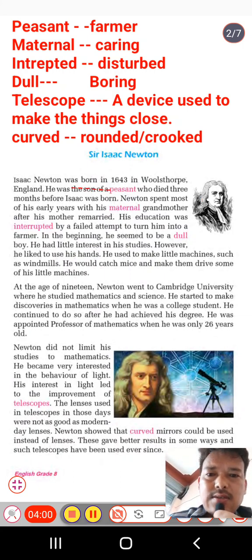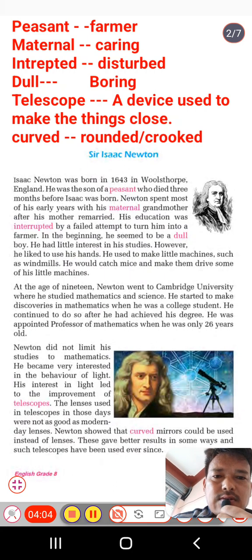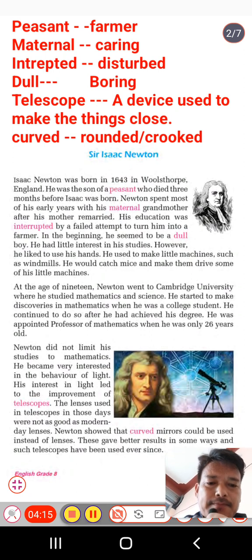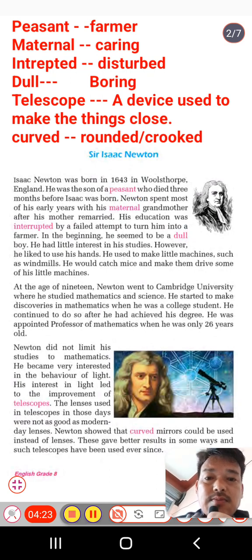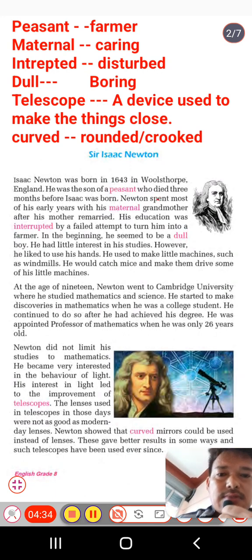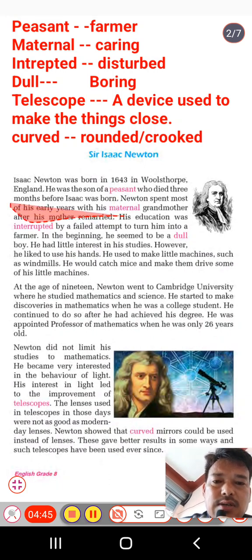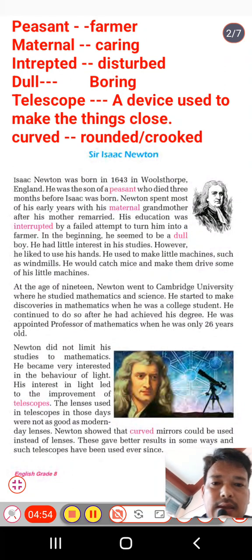Isaac Newton was born in 1643 in Woolsthorpe, England. He was the son of a peasant farmer who died three months before Isaac was born. When he was just three months old his father had already died. Newton spent most of his early years with his maternal grandmother after his mother remarried.